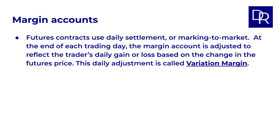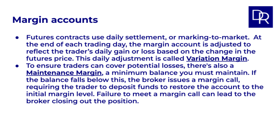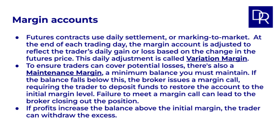Futures contracts use daily settlement, or marking to market. At the end of each trading day, the margin account is adjusted to reflect the trader's daily gain or loss based on the change in the futures price. This daily adjustment is called variation margin. To ensure traders can cover potential losses, there's also a maintenance margin — a minimum balance you must maintain. Let's assume a maintenance margin of $4,000 per contract, or $8,000 total. If the balance falls below this, the broker issues a margin call, requiring the trader to deposit funds to restore the account to the initial margin level. Failure to meet a margin call can lead to the broker closing out the position. Conversely, if profits increase the balance above the initial margin, the trader can withdraw the excess.